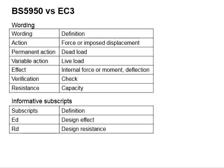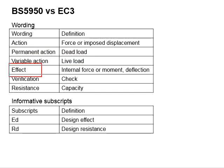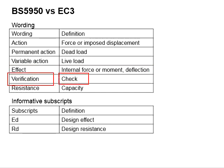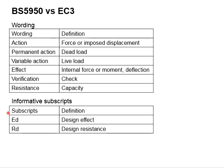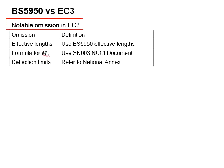These are the differences in wording between BS and Eurocode 3. Eurocode 3 uses the word 'actions' to represent forces or imposed loads — permanent actions for dead load and variable actions for live load. 'Effects' represents internal forces, moments, or deflections. 'Verification' represents a check, and 'resistance' represents capacity. Notable subscripts include 'Ed' for design effects (design load) and 'Rd' for design resistance (design capacity of the section).